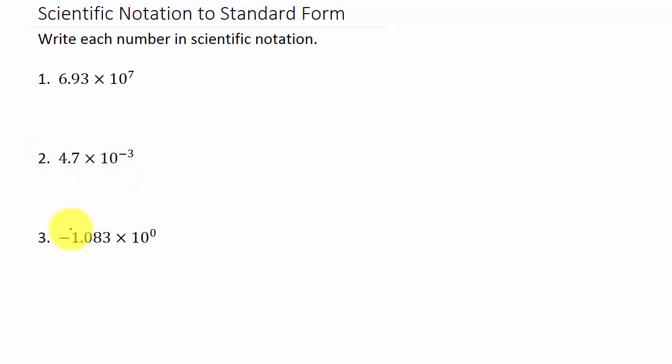Okay, and then you can see we have one down here that's zero. Alright, so what I do is I just write down the number, 6.93, and here's the decimal.